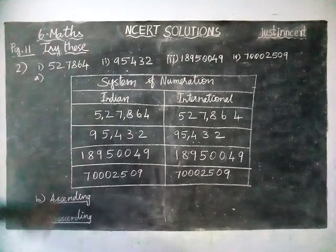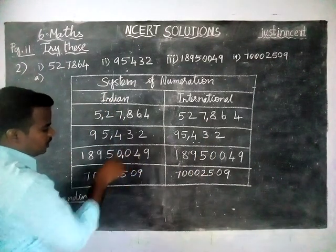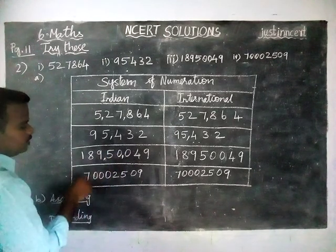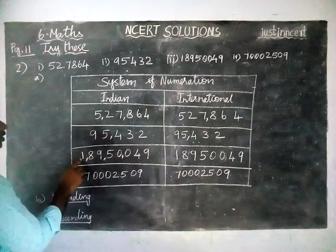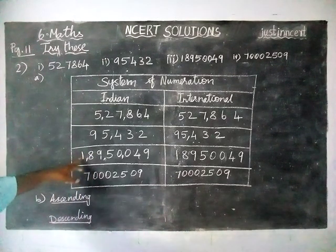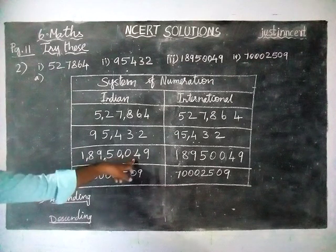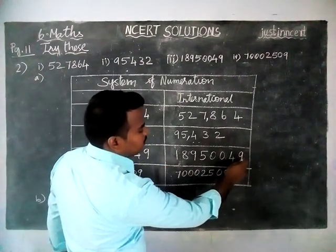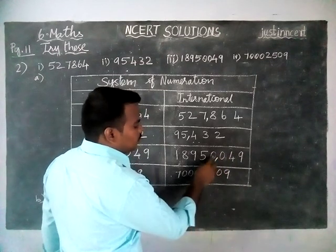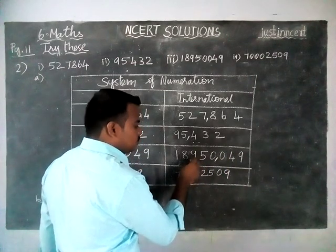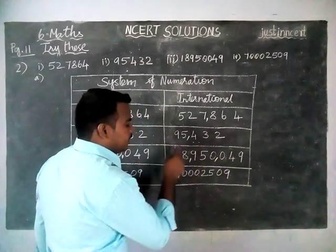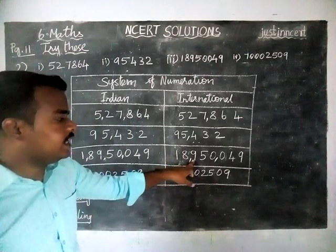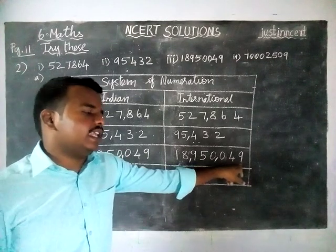Next number. Ones, tens, hundreds — comma — 1000, 10,000 — comma — lakh, 10 lakh — comma — crore. So 1 crore, 89,00,049. In the same case, international system of numeration: ones, tens, hundreds — 1000, 10,000, 1,00,000, 10,00,000 — so this is 1,89,50,049, written as 18,950,049 in international system.